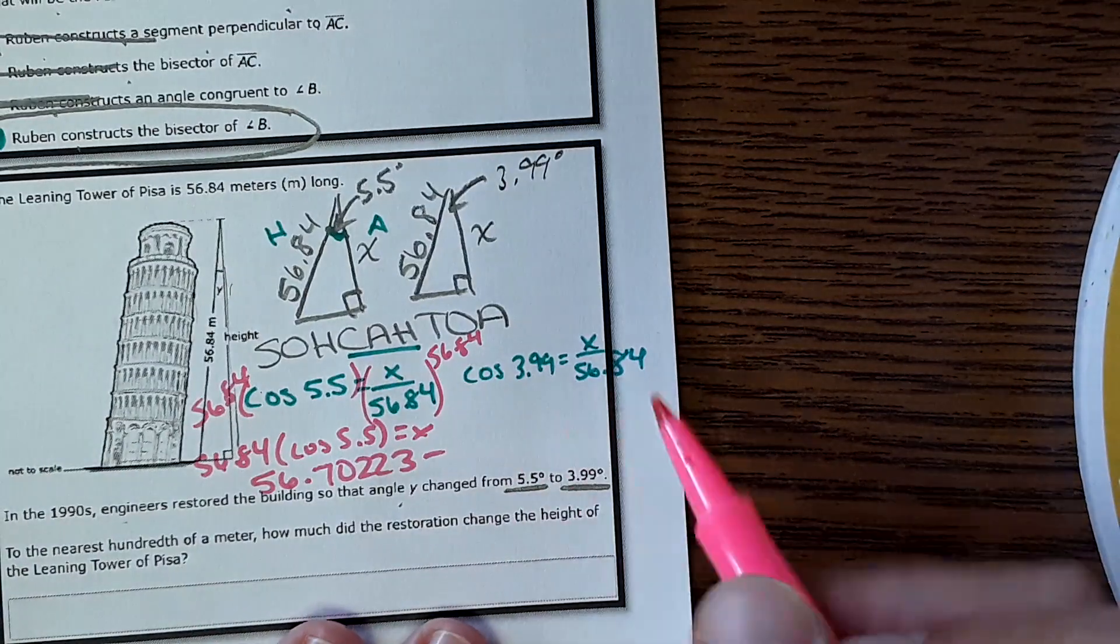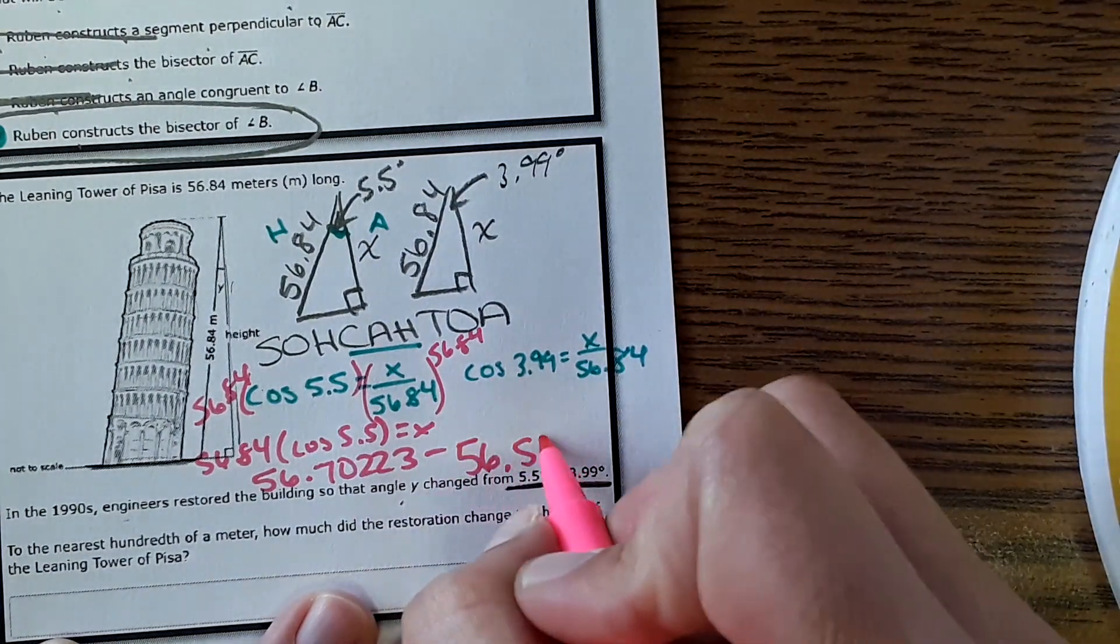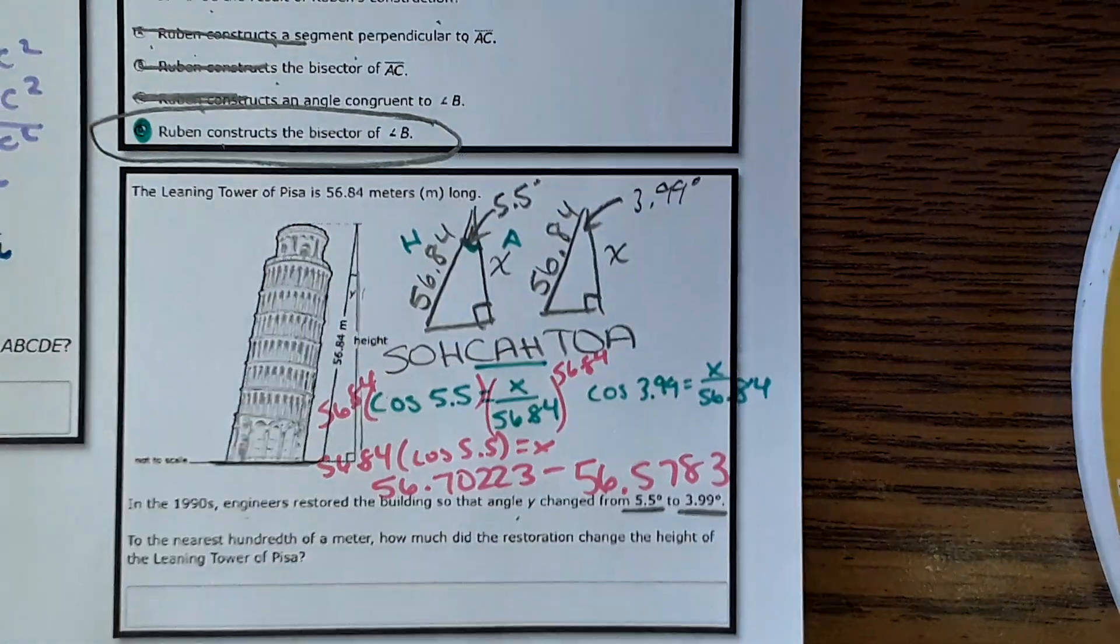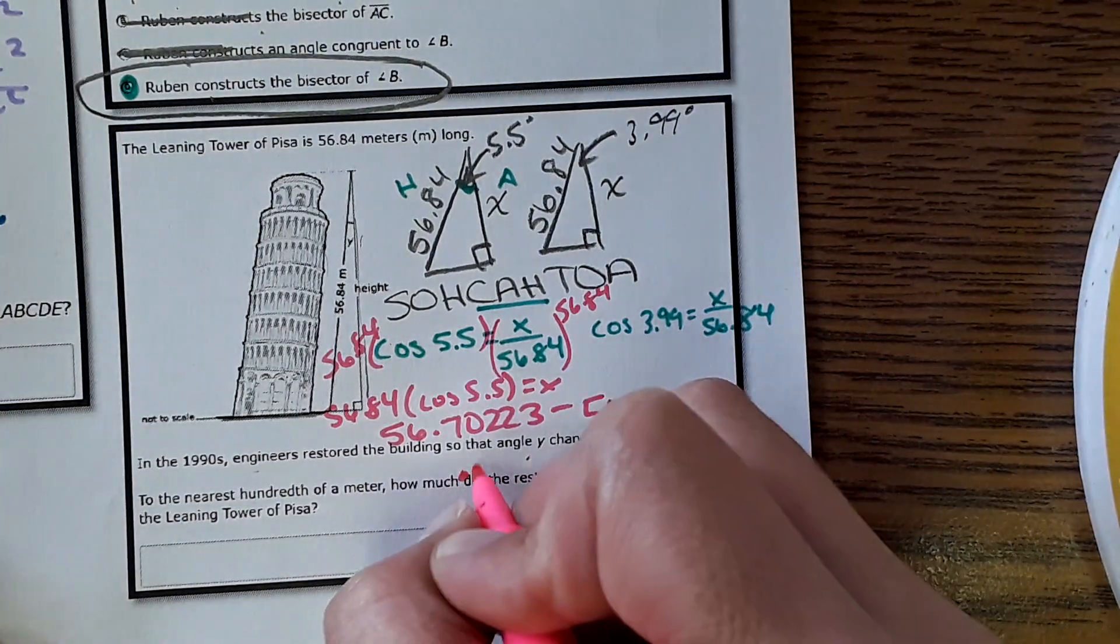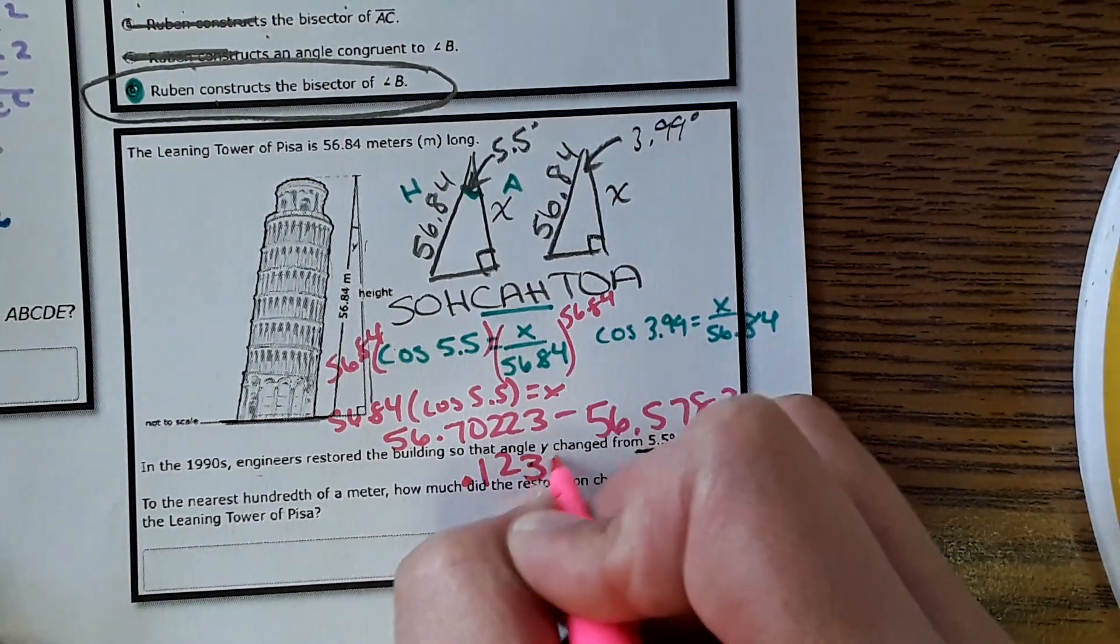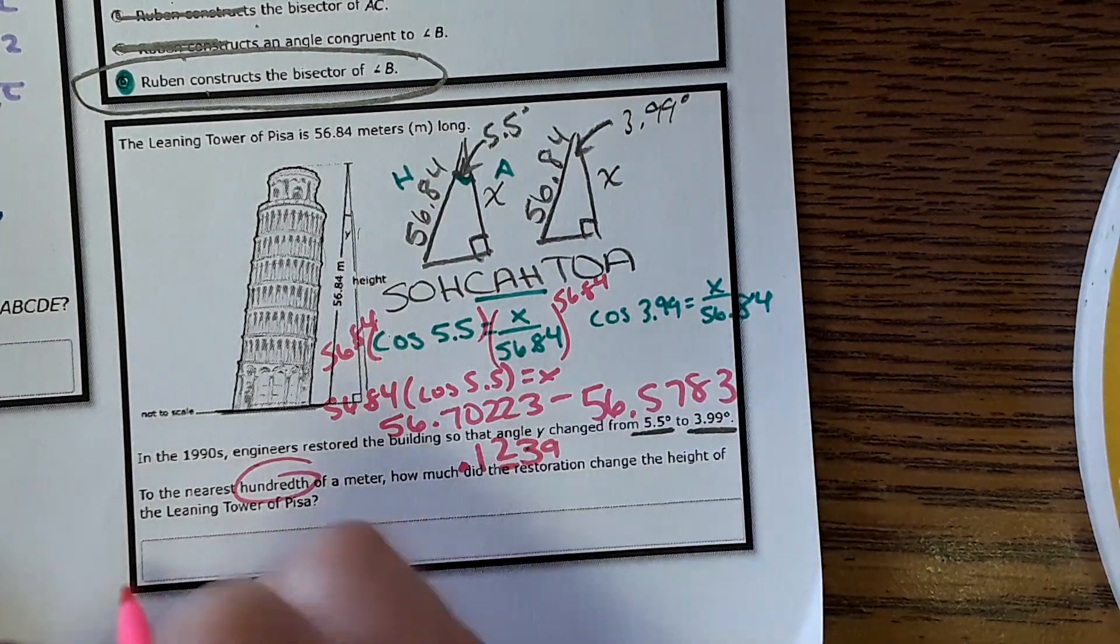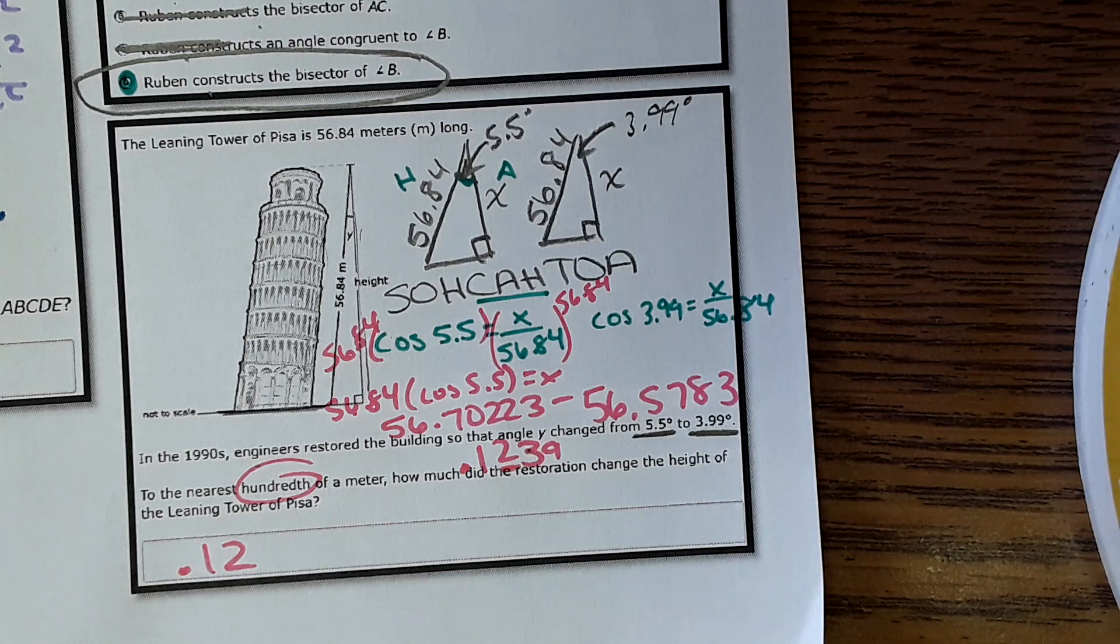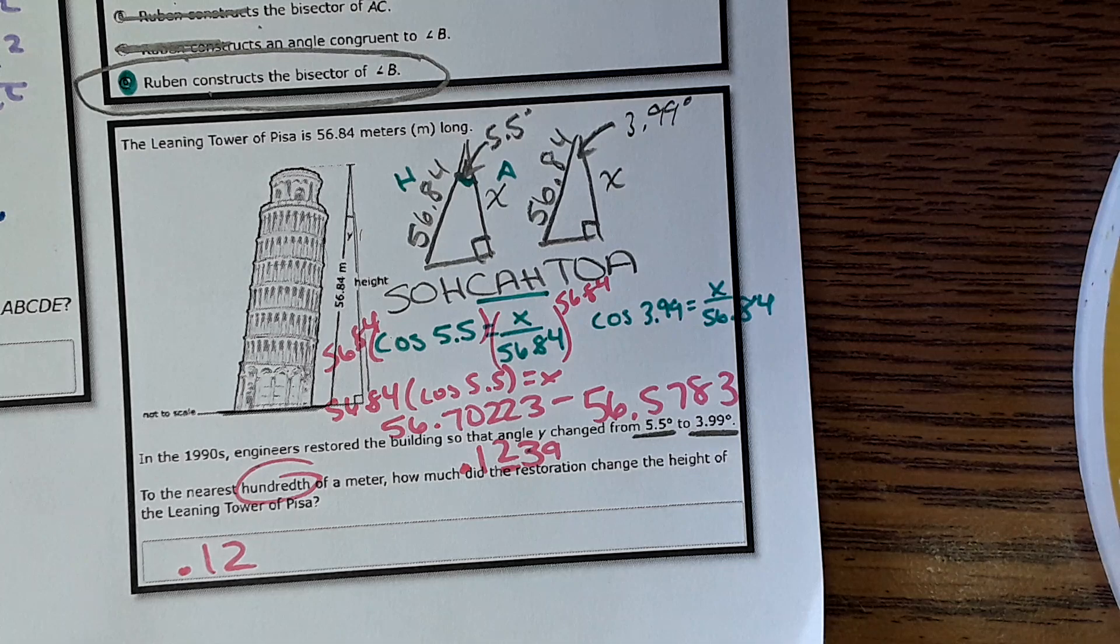And this solves to 56.70223. And this one, I don't need to show every little thing. You would plug it in the calculator and you get this. Okay, then you subtract them to see how the height has changed. It comes out to 0.1239. This says to round to the nearest hundredth. So that would be 0.12. And that's it. Okay. So at this point, you can grab a laptop.